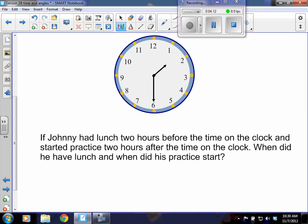So it says, if Johnny had lunch two hours before the time on the clock and started practice two hours after the time on the clock, when did he have lunch? And when did his practice start? So the first thing we have to understand is what time is it on the clock? And as you look here, we have a short hand pointing in between the 1 and the 2, which would mean that it's not quite 2 o'clock yet, but it's still in the 1. And then we have the long arrow pointing down at the 6, which you know is halfway around the clock. So that would be half of an hour. So that would be 1:30.